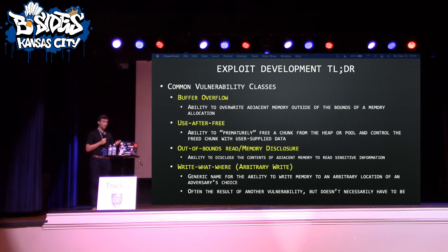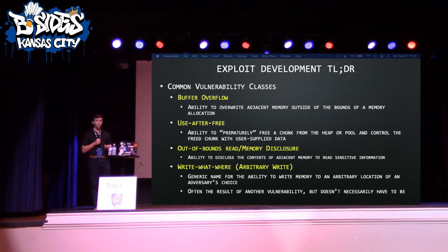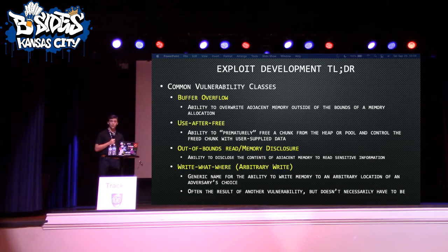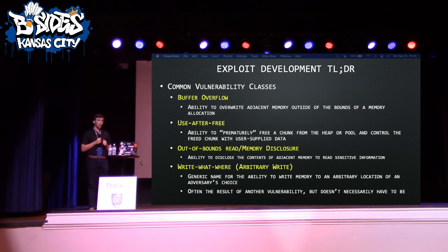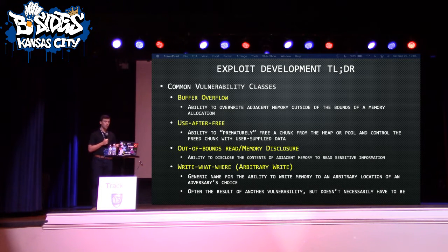Going back to vulnerability classes — I'm sure most people have heard of these before. Buffer overflow: you have the ability to overwrite adjacent memory. Use after free: very common with larger C++ applications — if a developer references memory that was previously freed, an attacker could leverage primitives to control that freed memory. Out-of-bounds reads: you can leak sensitive information from adjacent memory. Write-what-where vulnerabilities — also called arbitrary writes — can be the result of another vulnerability class or a class in themselves, giving an adversary a primitive to write arbitrary memory to a controlled or uncontrolled location.